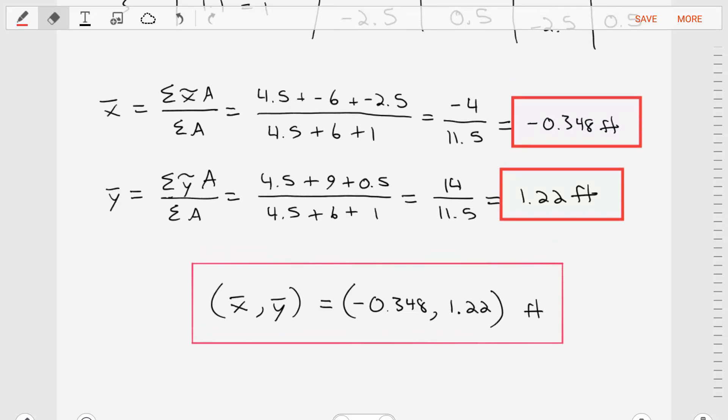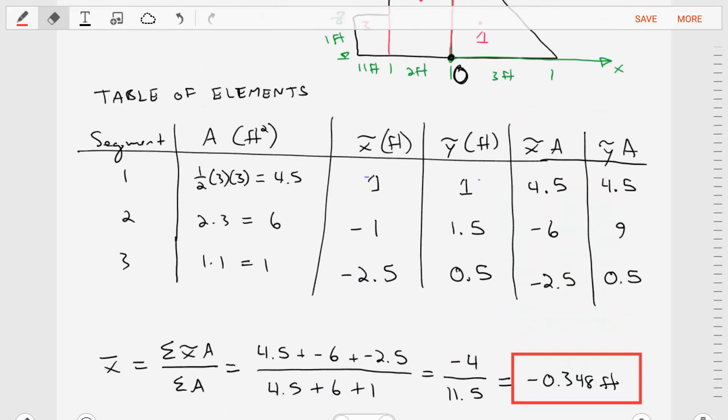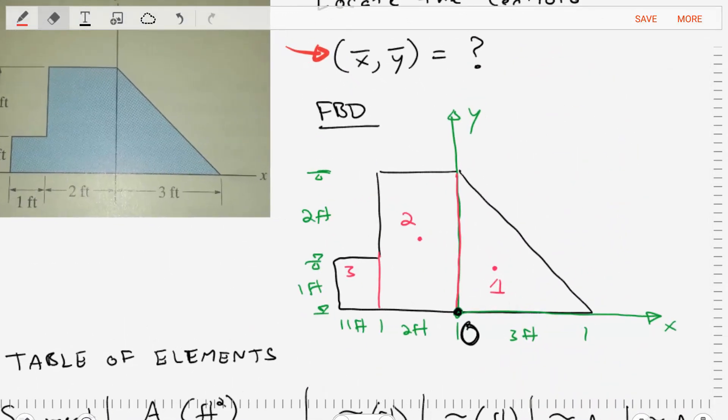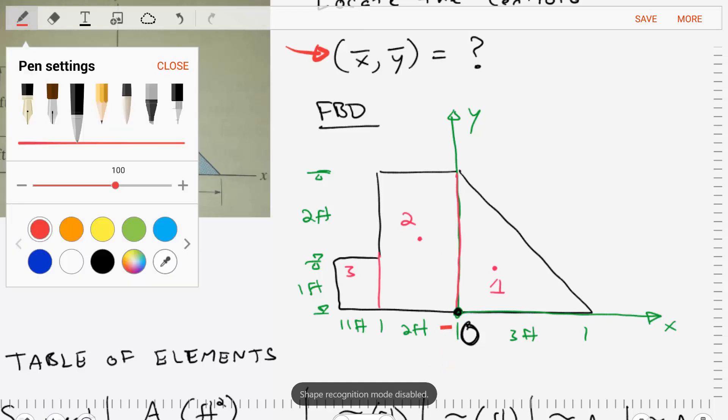So let's see. At negative 0.3 and at 1.22, does that make sense? Well, that would be about right here. If we're going negative 0.3 something and... Oh, I've got to turn the button off.